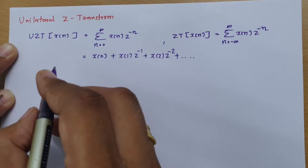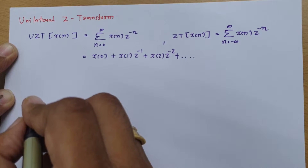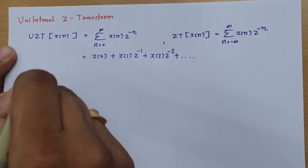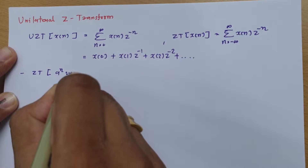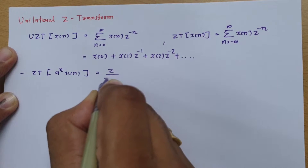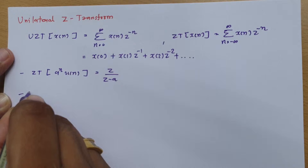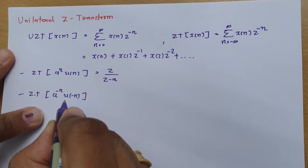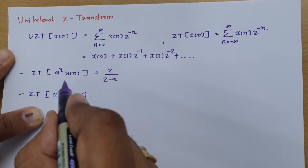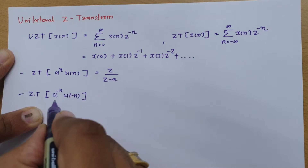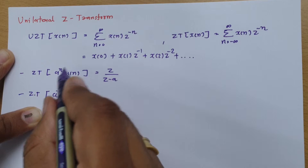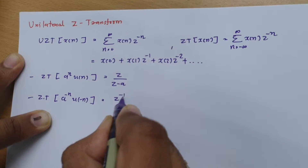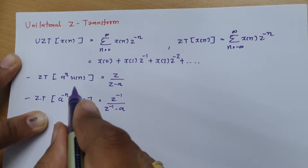Now I'll explain some basic Z-transform pairs we have already seen and how there will be a difference in calculation of unilateral and bilateral Z-transform. We have seen that the Z-transform of a^n * u(n) is Z/(Z - a). We have also seen the Z-transform of a^(-n) * u(-n), which is the time reversal of that signal. For the time reversal, we replace n with -n, giving Z^(-1) / (Z^(-1) - a).